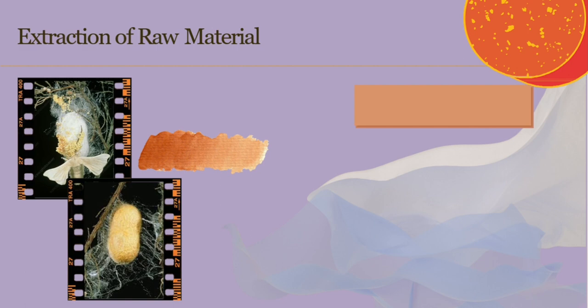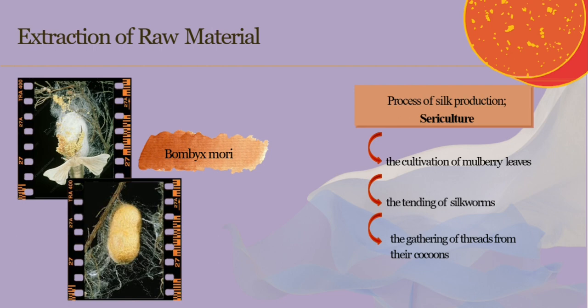For the extraction of raw material, there are several commercial species of silkworms. Bombyx mori, the caterpillar of the domestic silk moth, is the most widely used and intensively studied silkworm. The process of silkworm production is known as sericulture — the cultivation of mulberry leaves, the tending of silkworms, the gathering of threads from their cocoons, and the weaving of silk.